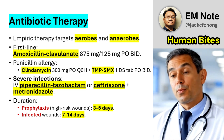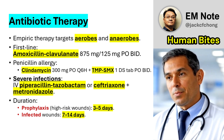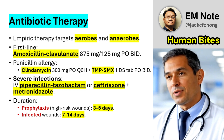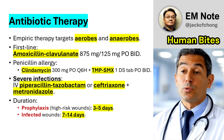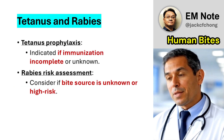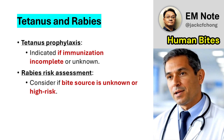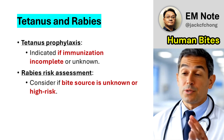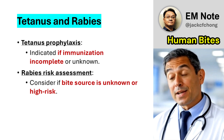Antibiotic duration depends on the severity of infection. Prophylactic antibiotics for high-risk but uninfected wounds are given for 3 to 5 days. Established infections require treatment for 7 to 14 days. Tetanus prophylaxis is necessary if the patient's immunization status is incomplete or unknown. Rabies risk assessment should be conducted for bites from individuals with unknown vaccination status or potential rabies exposure.